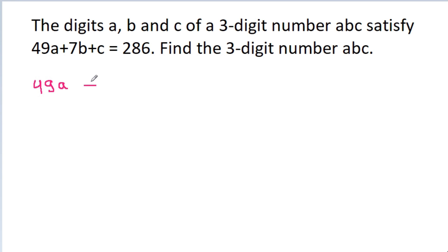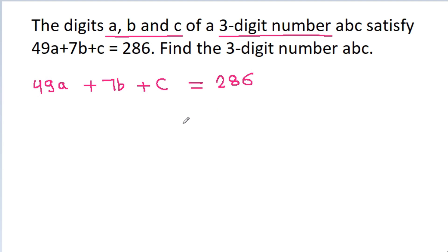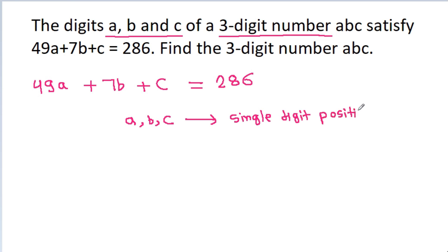We have 49a plus 7b plus c is equal to 286. And a, b, and c are digits of a three-digit number, which means they must be single-digit positive integers, and a cannot be equal to zero.